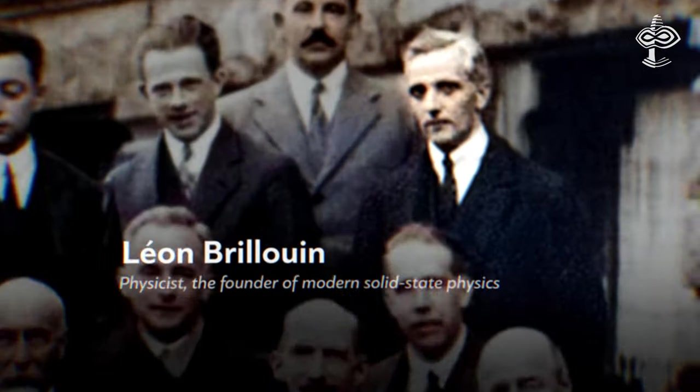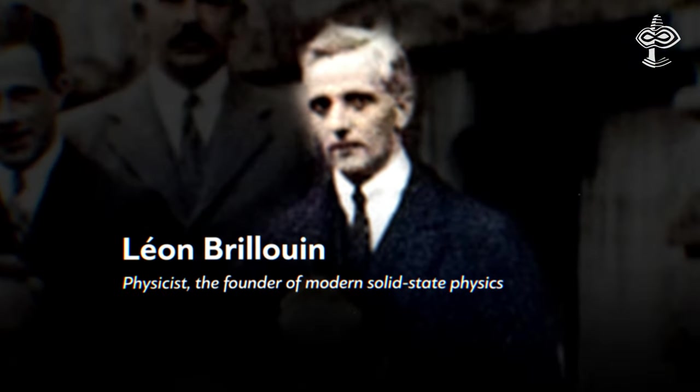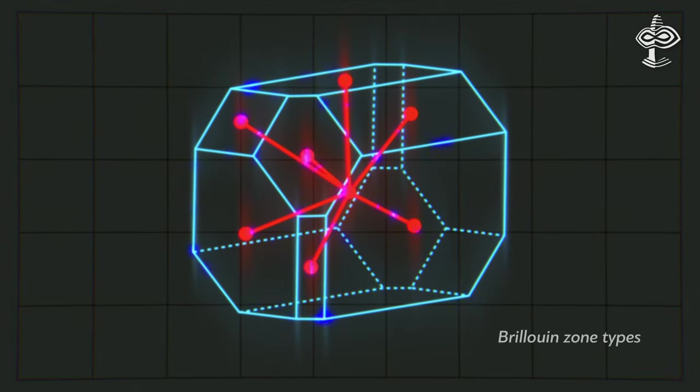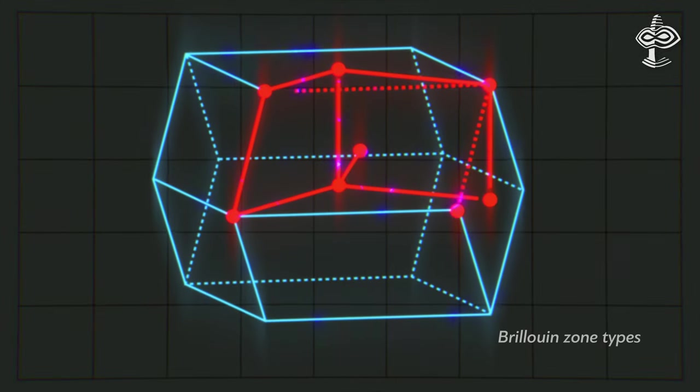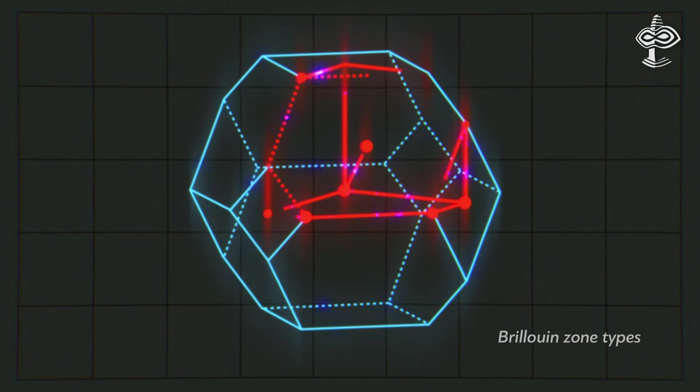He based a portion of his arguments upon the work done by the famous physicist Leon Brillouin, thereby prompting biologists to investigate his pioneering research on electrons and energy levels, which were named Brillouin zones.